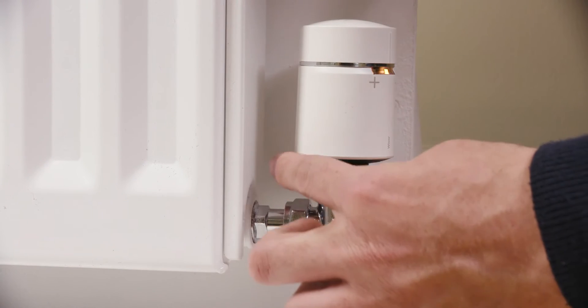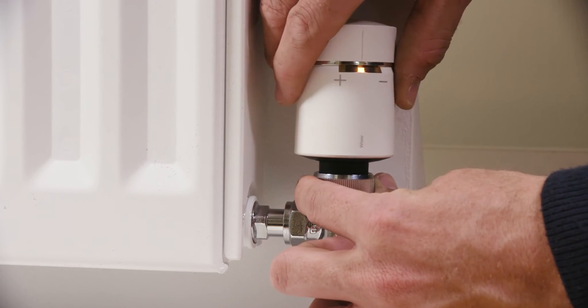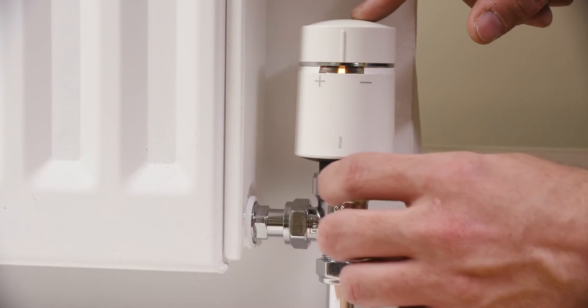To ensure the radiator thermostat LED indicators face forward, loosen the locking ring, adjust the head and tighten.